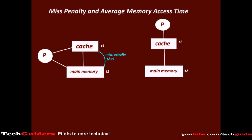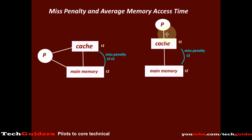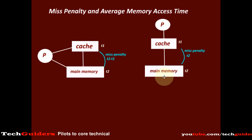In hierarchical access, the word is first searched in the top level. Only if this is a miss, then the lower level is accessed and searched. So if this is a hit, the time taken is t1. If this is a miss, then we have to spend an additional time of t2 to get the word from the lower level. So here the miss penalty is t2.